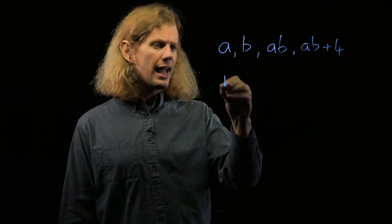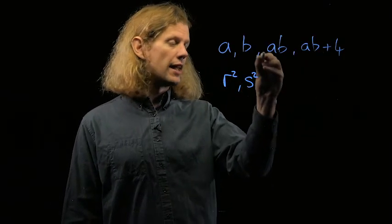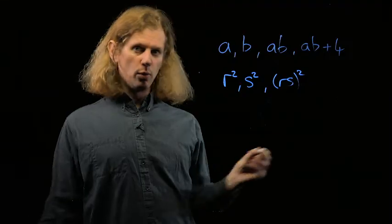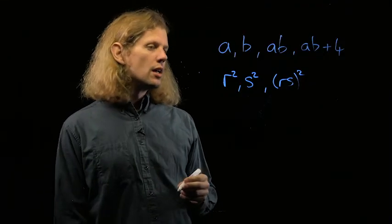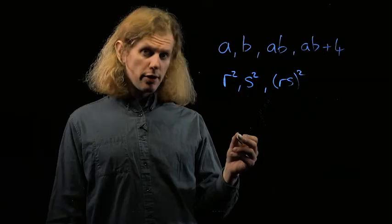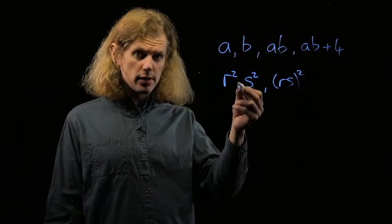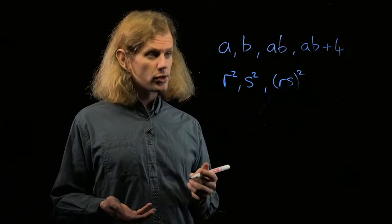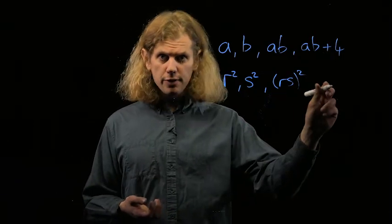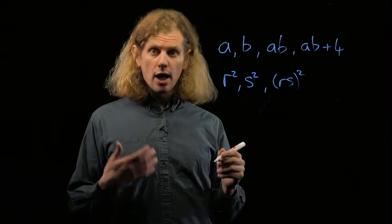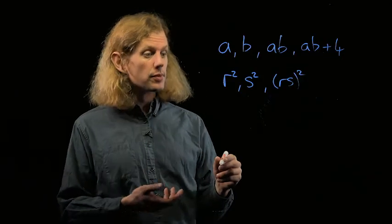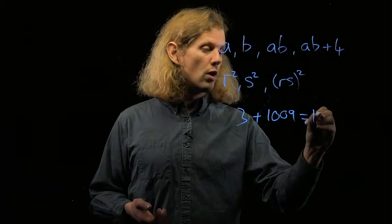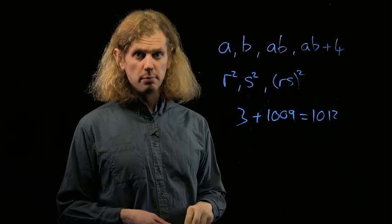But, of course, if a is a square and b is a square, then ab is automatically a square, and then ab+4 will automatically not be a square. So what we've got is that we can get 3 terms of the first 4 squares by taking the first 2 to be squares. And that completely answers the question. So the maximum number of squares possible in the sequence consists of 3 of the first 4 plus half the remaining 2018 terms. And so 3 plus half of 2018 is 1012, and that's the maximum possible number of squares.